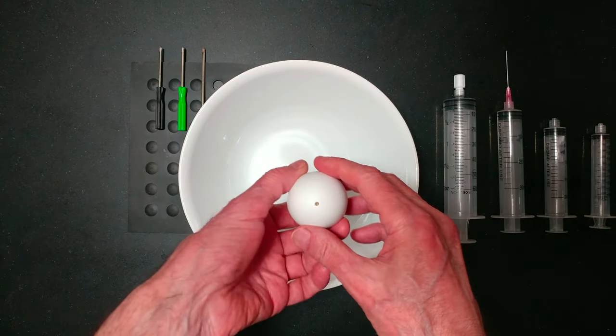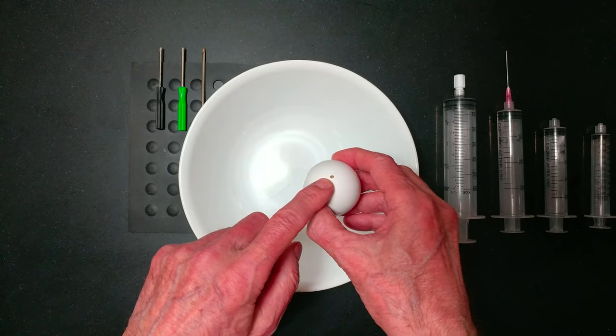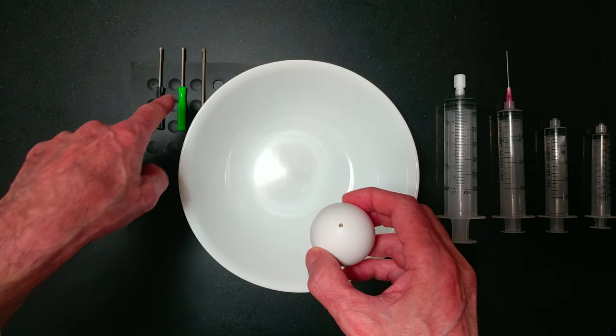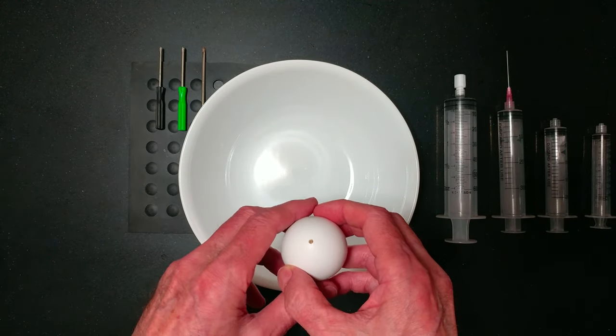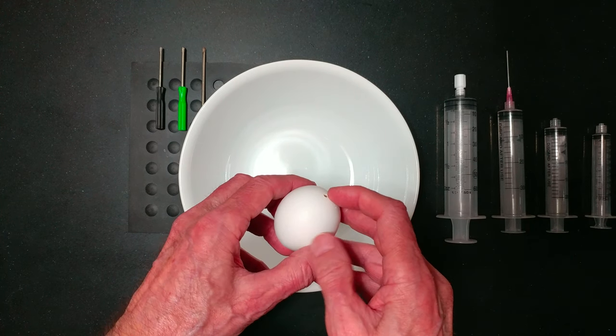I have an egg. I put a perfect 1/8 inch hole using three Phillips head screwdrivers into the bottom of the egg.